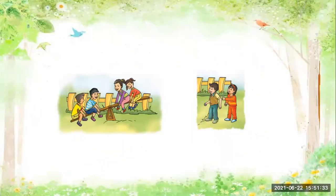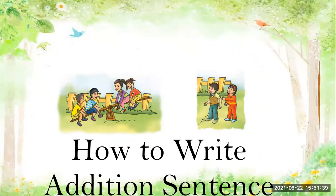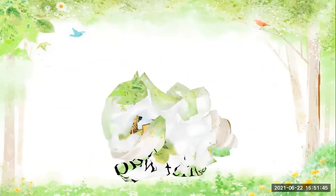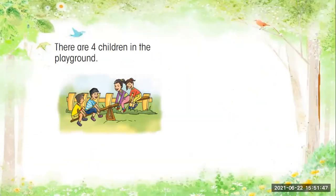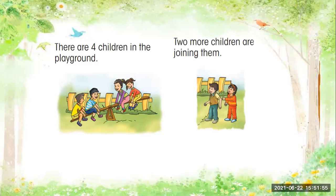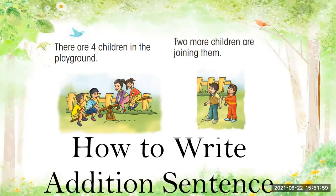Now look at this picture. What do you see? How do we write an addition sentence with this picture? As you can see here, there are four children in the playground, and two more children are joining them. So how do we write an addition sentence with this picture?